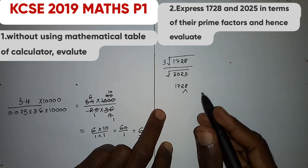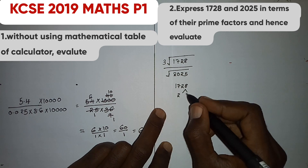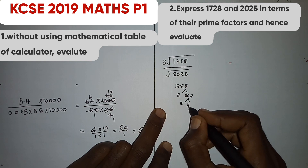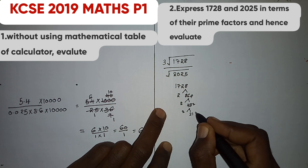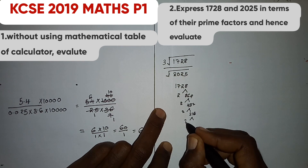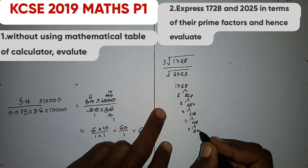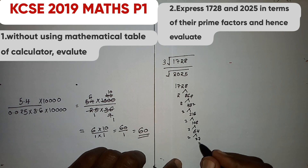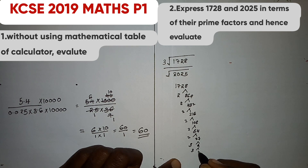For 1728, we use the factor method. The smallest number divisible by 1728 is 2, giving 864. Then 2 gives 432, 2 gives 216, 2 gives 108, 2 gives 54, 2 gives 27, 3 gives 9, 3 gives 3, and 3 gives 1.